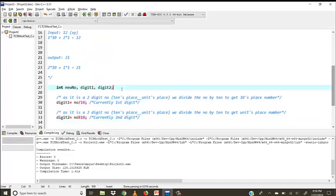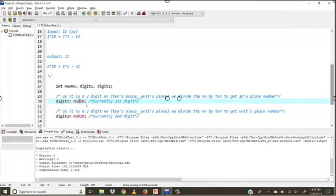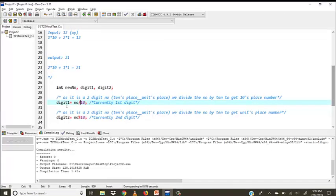We have declared three variables, three integers. Firstly, to get the tens place digit, we will divide the input number by 10. So whatever will be the quotient will be stored in this integer variable.